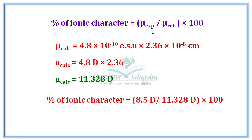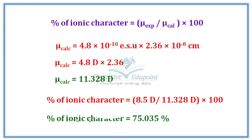Substituting into the formula: percentage of ionic character = (8.5 Debye / 11.328 Debye) × 100 = 75.035%, which is approximately 75%. To summarize: multiply the bond length in angstroms by 4.8 to get the calculated Debye value, then use the formula to find the percentage ionic character.